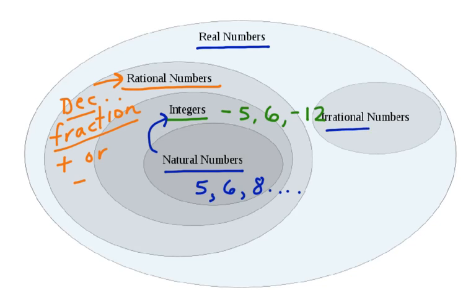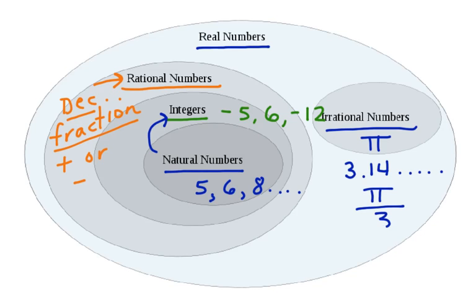And finally, we have irrational numbers. Irrational numbers are numbers that, when we divide them, they go on and on without stopping. For example, pi is an irrational number — 3.14 goes on and on, so that's an irrational number. It's a decimal without an ending. It can also be in fraction form: pi over 3 is also irrational. Irrational numbers are also real numbers, but they're in a category all on their own.